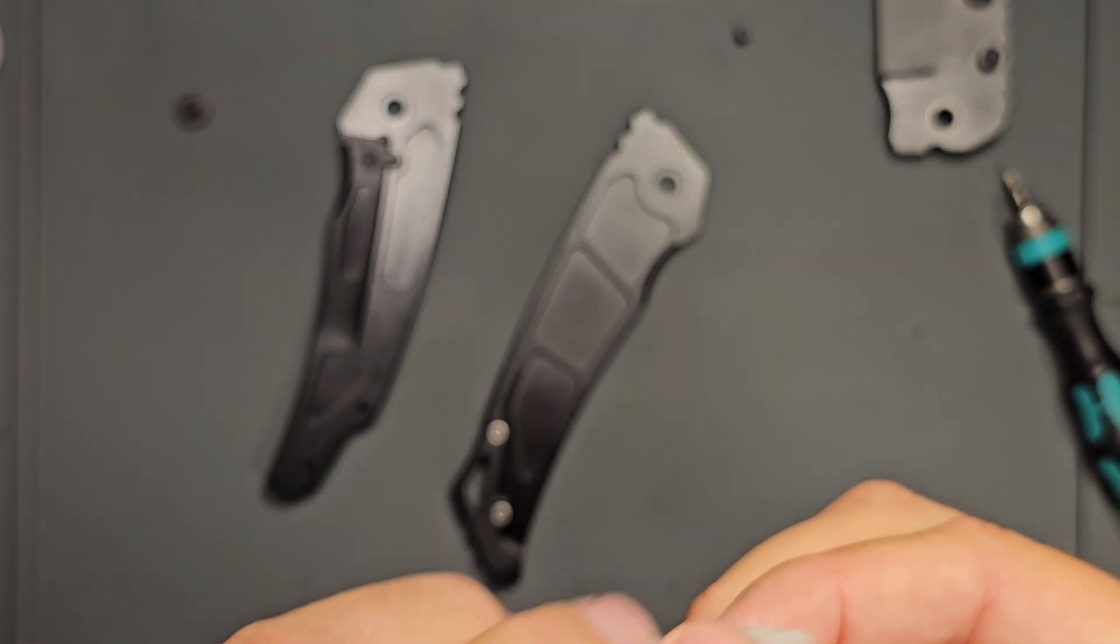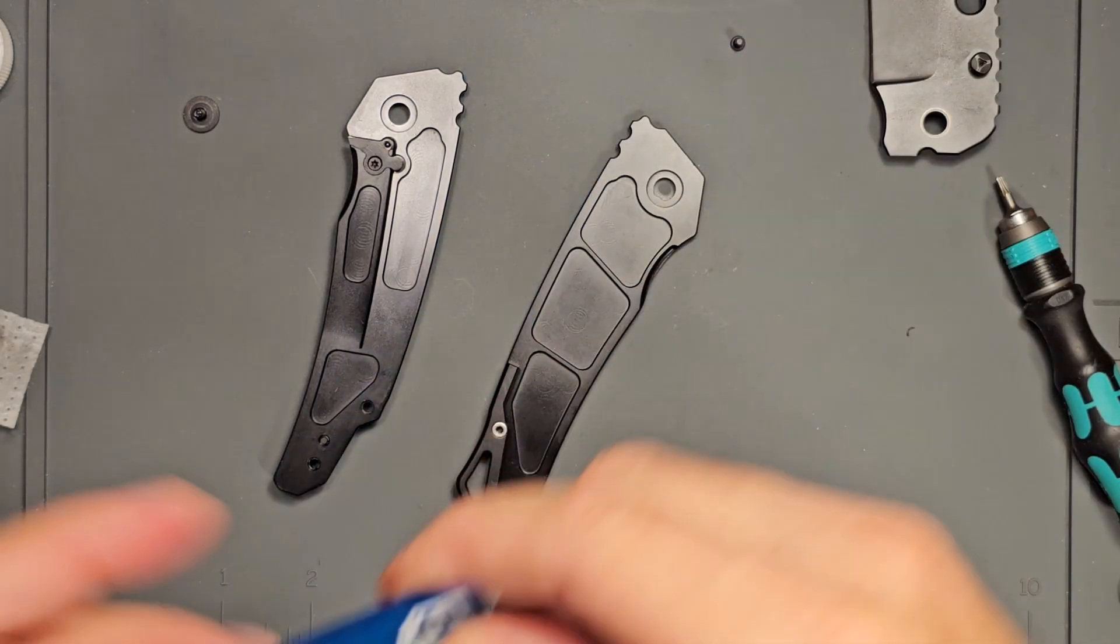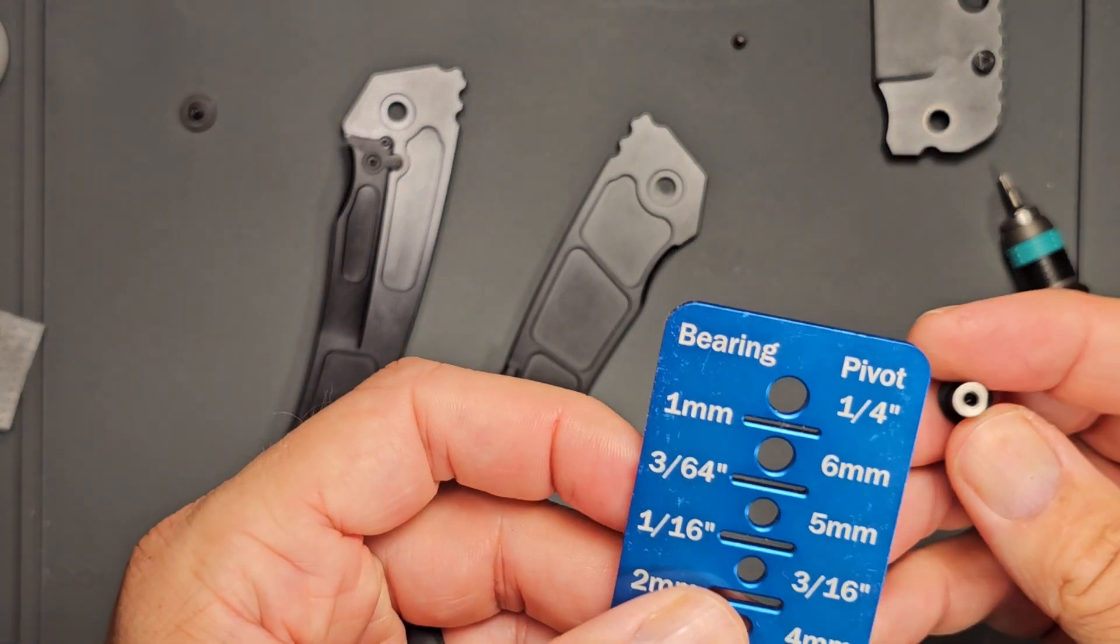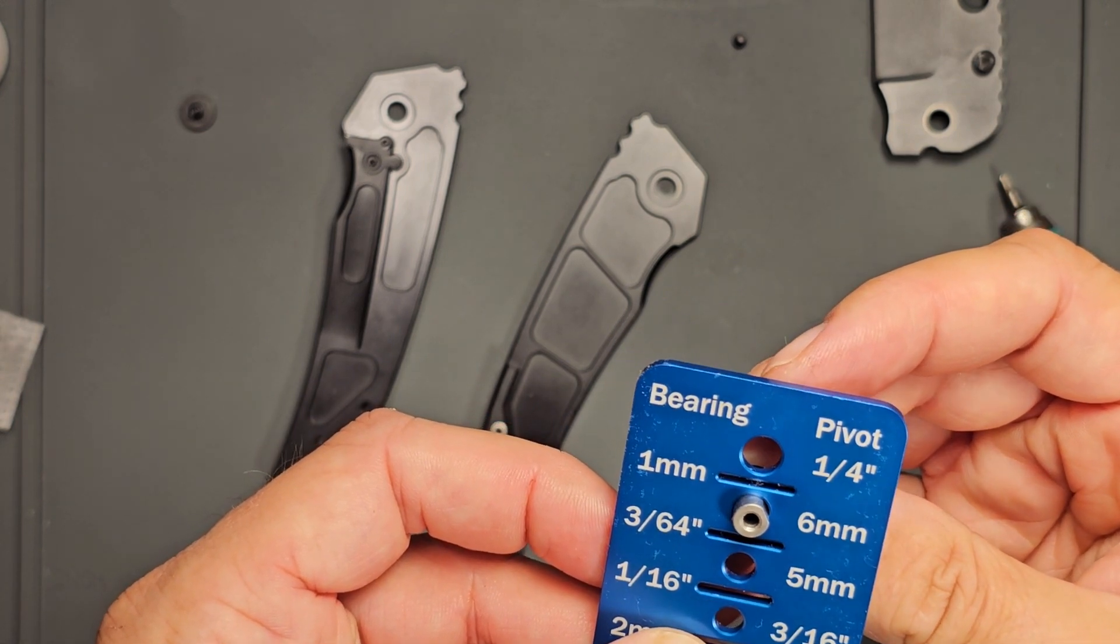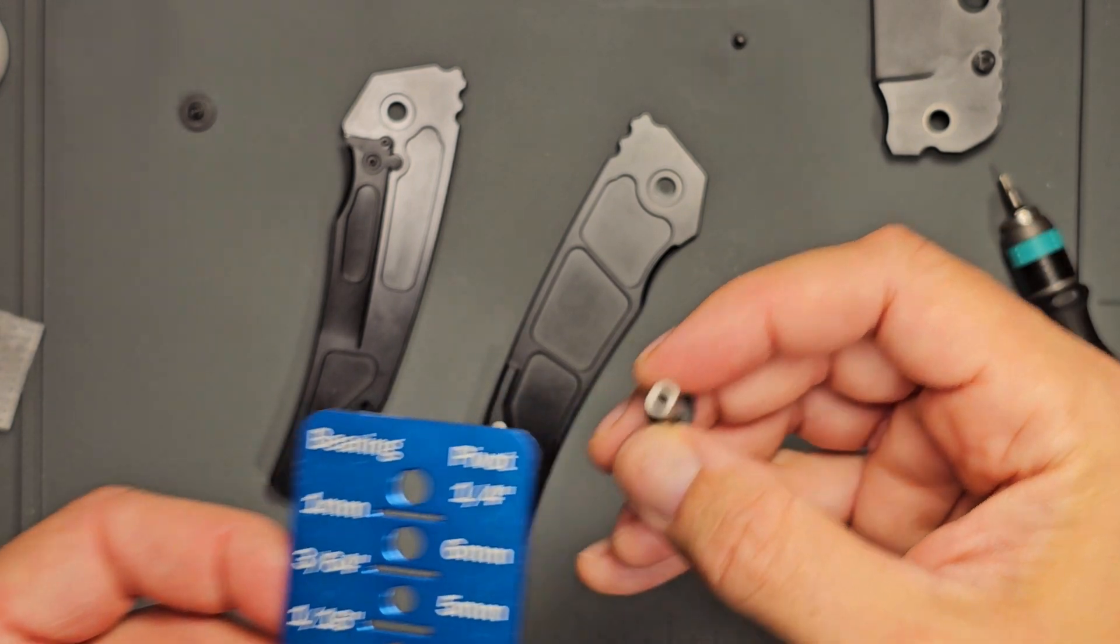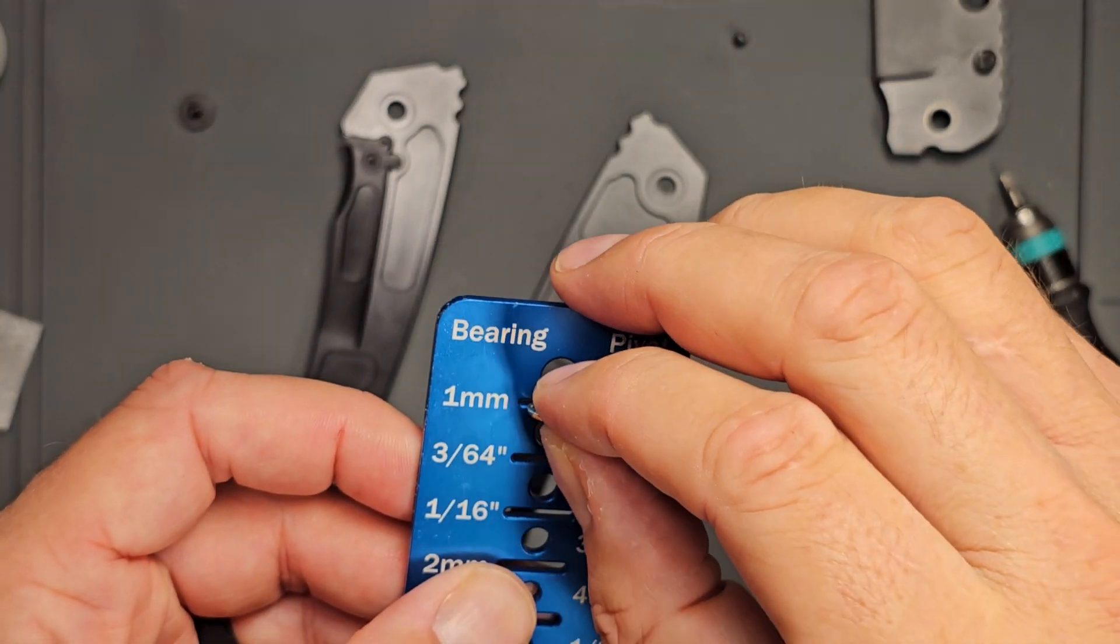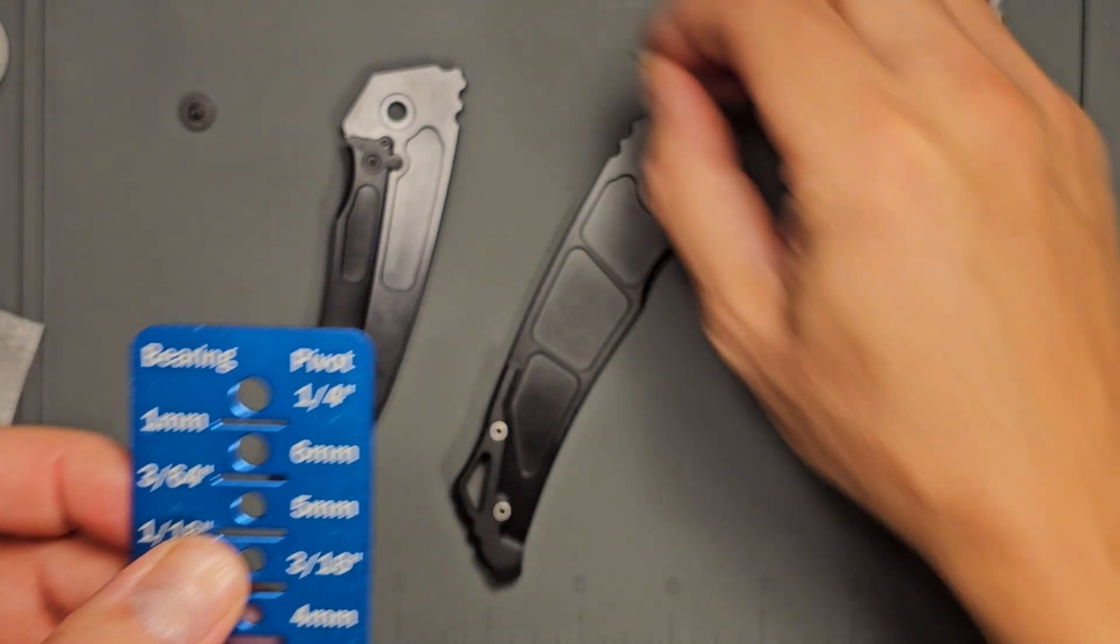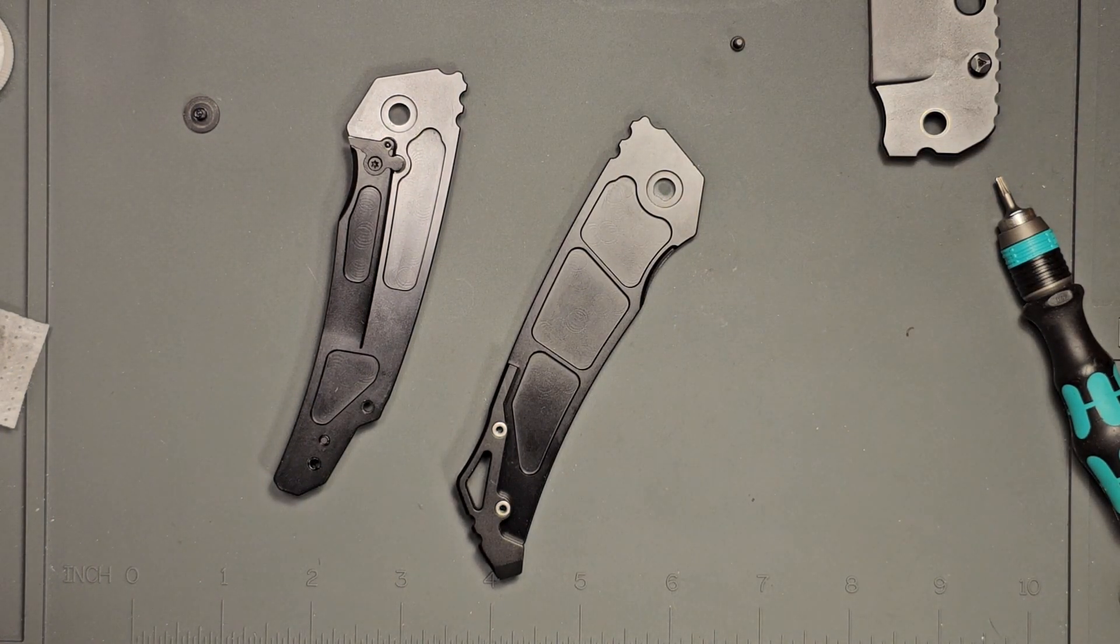Give that a second. I will go ahead and, for folks that may want to put some different bearings in, this does appear to be a six millimeter pivot and three sixty-fourths. So six millimeter, three sixty-fourths on the bearings.